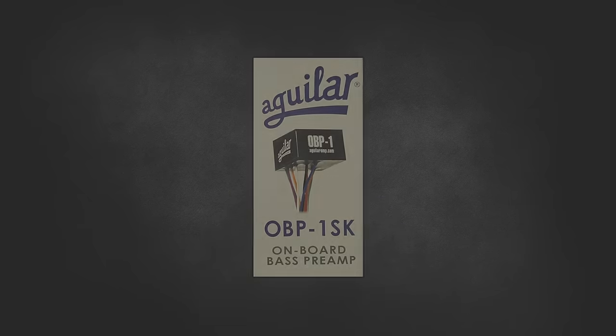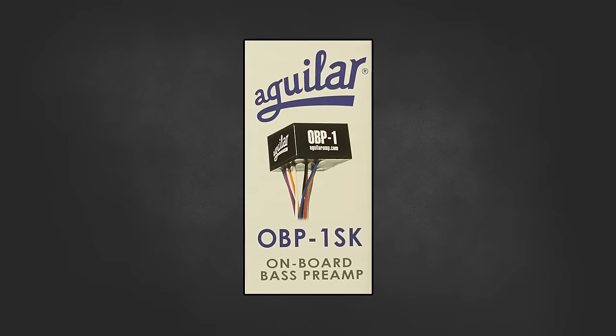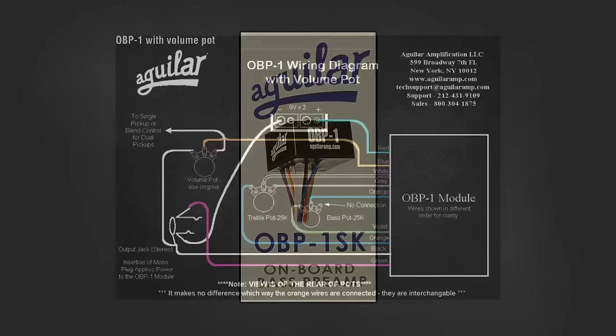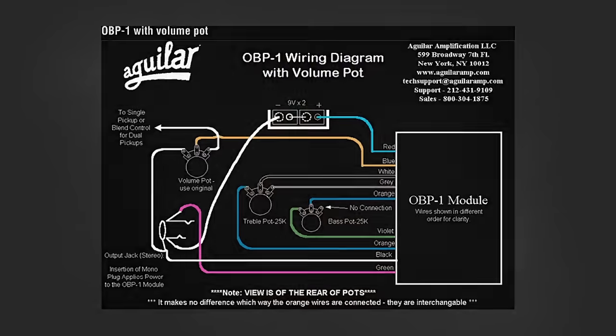These pickups are passive and Flea combines those with an Aguilar preamp to increase the sensitivity and the output. Aguilar preamps have a high headroom, low distortion and can reproduce the full dynamic range. Many bass players like this combo because of those features.